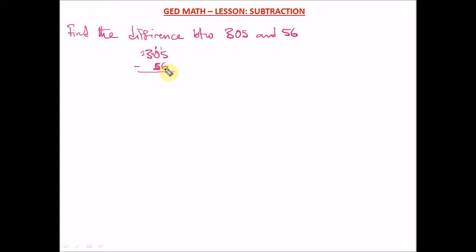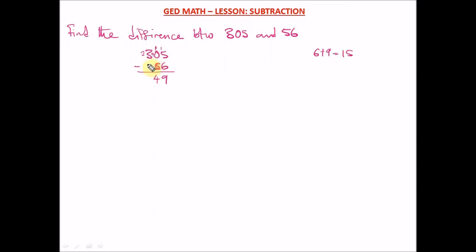The 1 we brought to the ones column is worth 10, so 10 + 5 = 15. Now 15 minus 6 gives us 9. In the tens column we have 9 remaining; 9 minus 5 gives us 4. In the hundreds column we are left with 2, and 2 minus 0 gives us 2. So our answer is 249.